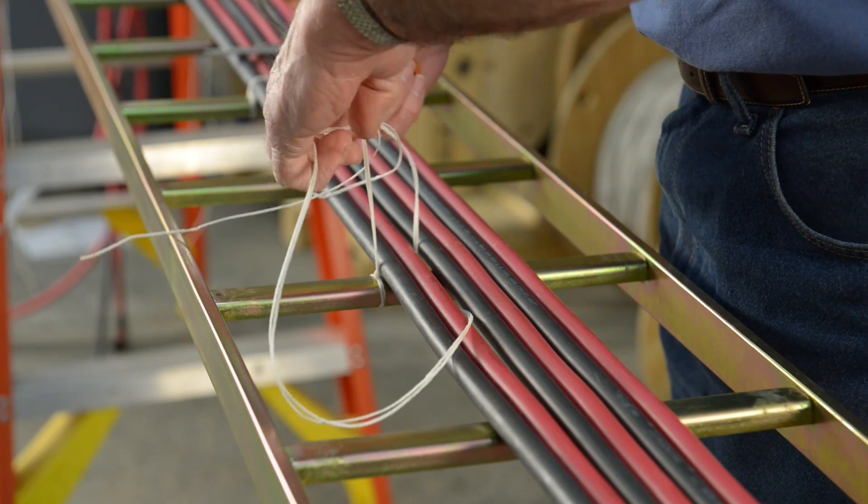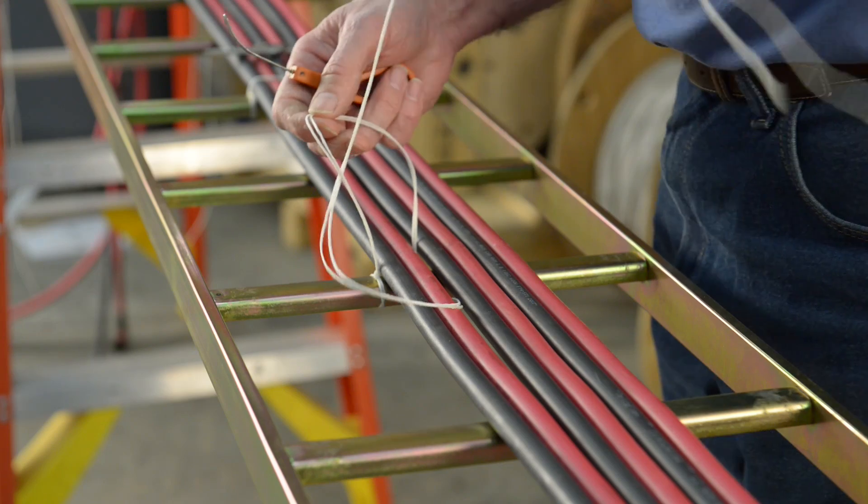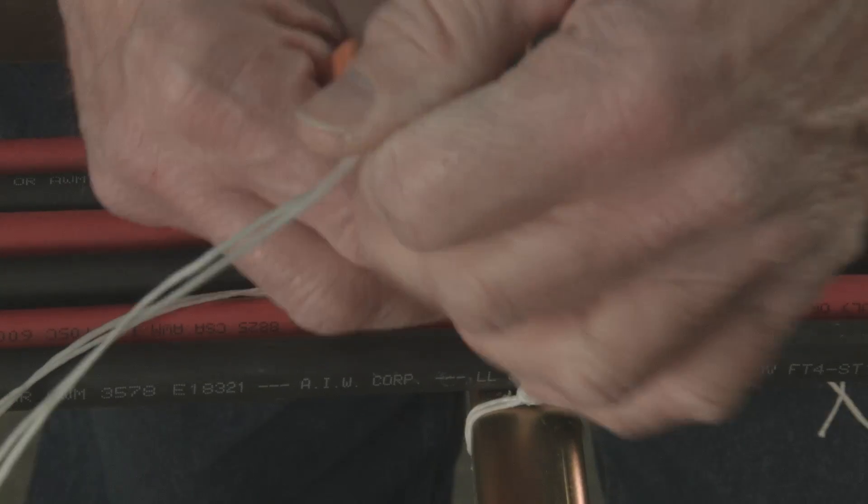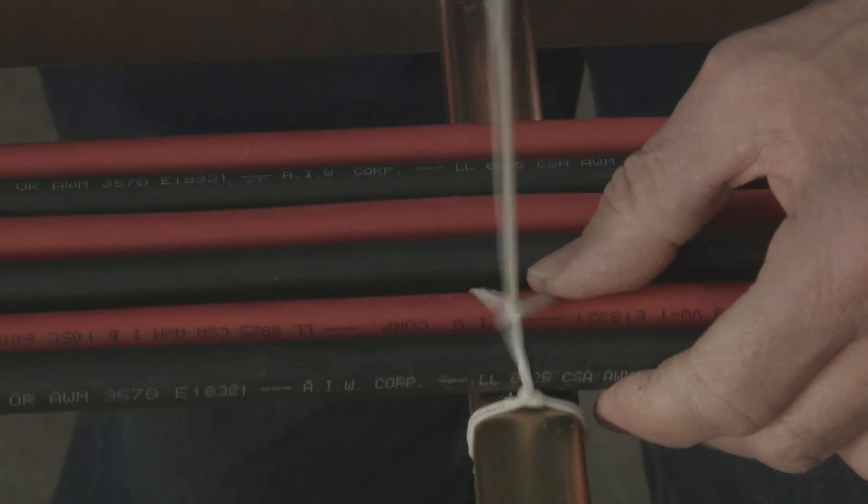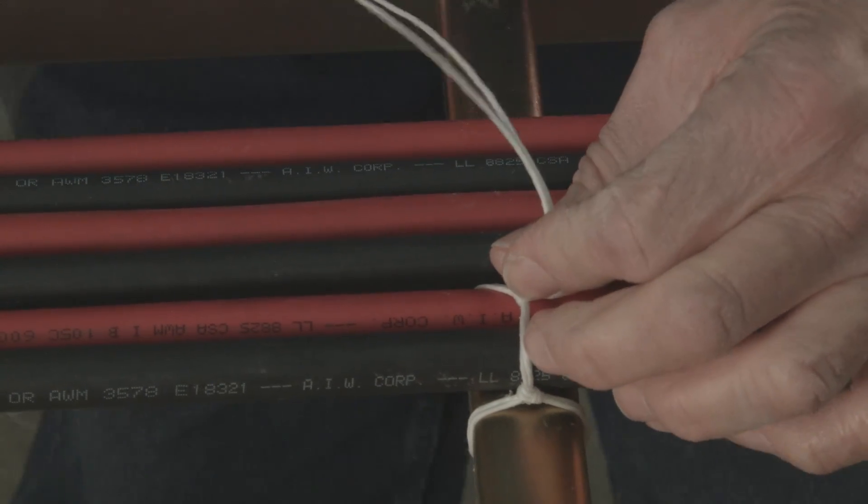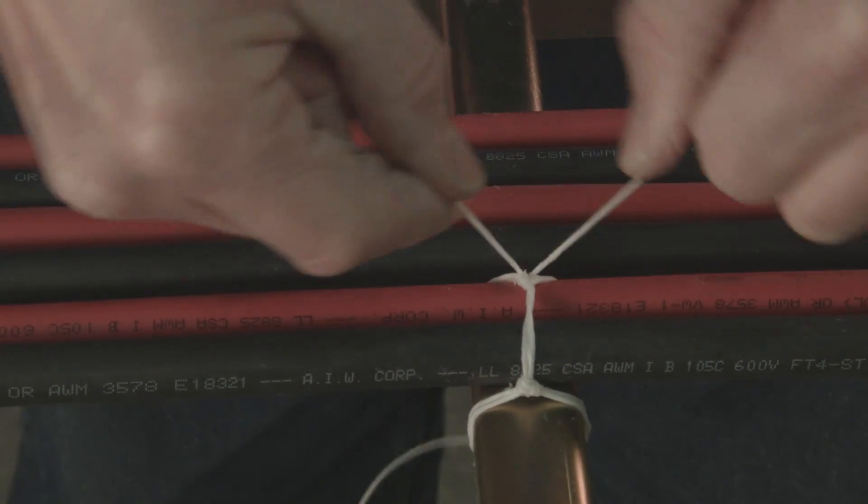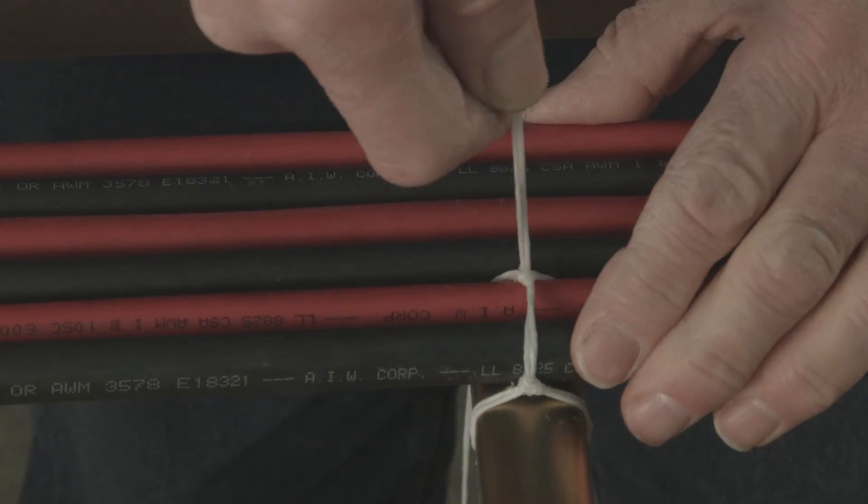Then go over top of the first string, in between the two, and pull that down. And you're going to make a knot there, or you're going to pull that tight.